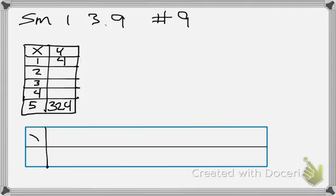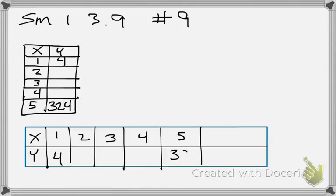So we're used to seeing it in this form. So it would be like x and y. Then we would have 1 is 4, 2 we don't know, 3 we don't know, 4 we don't know, and 5 is 324. So now we just need to fill in those blanks, right?